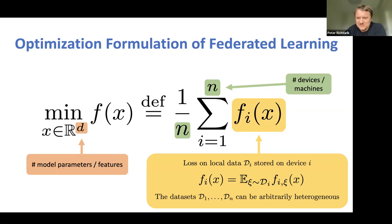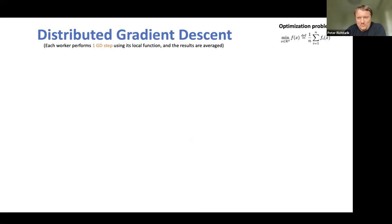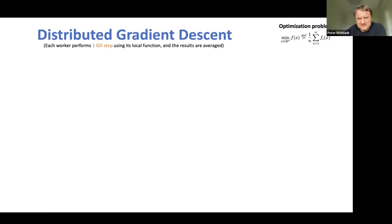The number of parameters d could be even larger than n because we work with over-parameterized models typically. Both n and d are a challenge, but I'm going to focus on d being the challenge in this talk. Let's come up with the simplest possible algorithm for solving this problem. The simplest possible algorithm is gradient descent — we call this distributed gradient descent, even though it's just gradient descent implemented in a distributed environment.